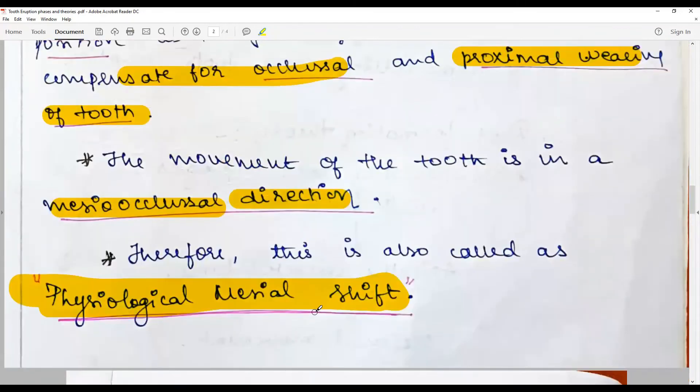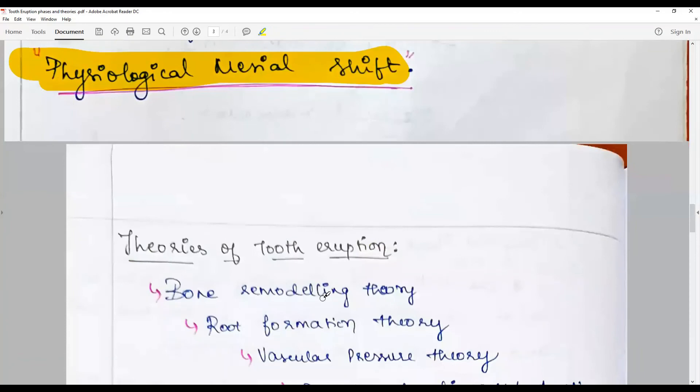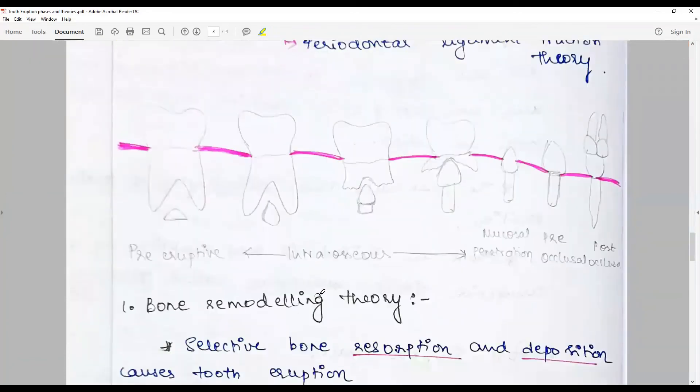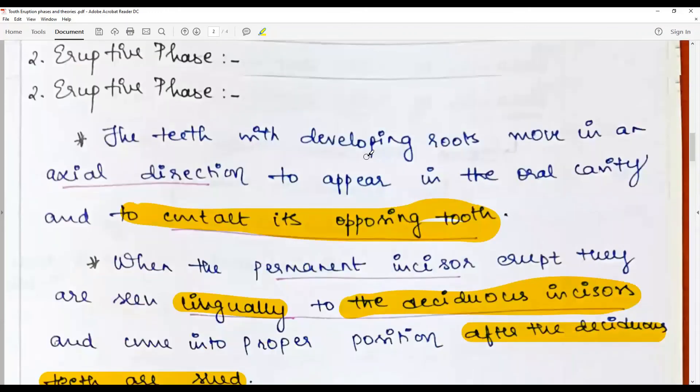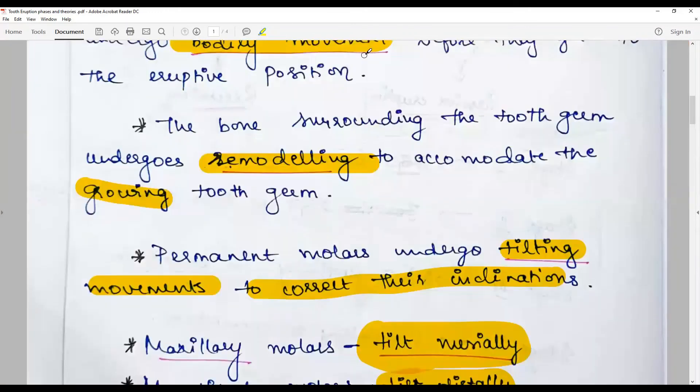So when a tooth is extracted prematurely, mostly the tooth will move in a mesial direction. The distal tooth will move into the space and this is called as physiological drift. That is the clinical significance. So with that, the movements of the tooth eruption come to an end.